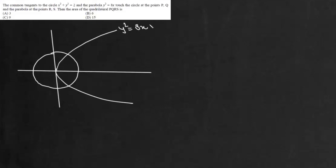They touch the circle at P and Q and parabola at R and S. So these tangents, they touch the circle at points P and Q and parabola at R and S. And it says find the area of this quadrilateral PQRS.